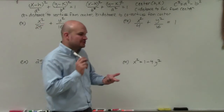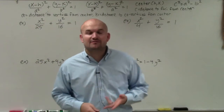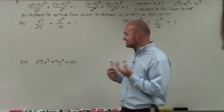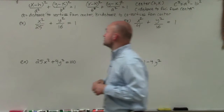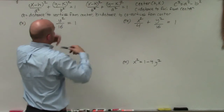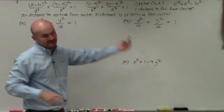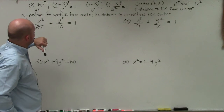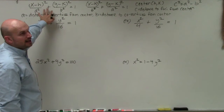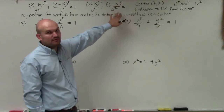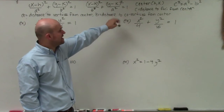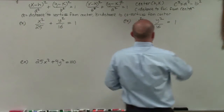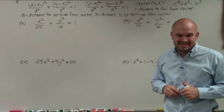Welcome, ladies and gentlemen. What I'd like to do is show you how to determine the focus, vertices, and co-vertices of an ellipse when the center is at the origin. We know the center is at the origin because h and k are both zero — none of the formulas have any subtraction. I've also written the general equations for an ellipse with a horizontal major axis and a vertical major axis, as well as what A, B, and C represent and their relationship.